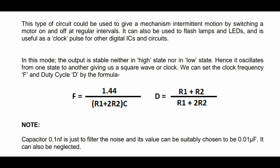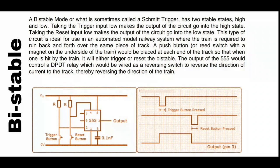The capacitor of 0.1 nanofarad is just to filter the noise, and its value can be suitably chosen as 0.01 microfarad or it can also be neglected. This is the basic circuit diagram and formula for astable mode.